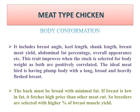Body conformation includes breast angle, keel length, shank length, breast muscle, abdominal fat percent, and overall appearance. This trait improves when stock is selected for body weight as both are positively correlated. If body weight is higher, body conformation will be superior — abdominal fat percent and breast meat yield will both be higher. The ideal meat bird has a plump body with a long, broad, and heavily muscled breast.